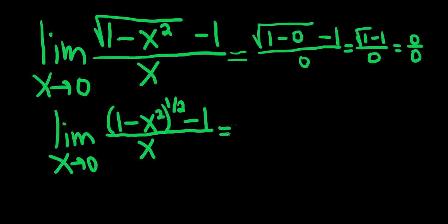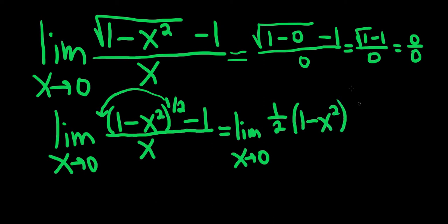Now let's apply L'Hopital's. This is the limit as x approaches 0. Taking the derivative in the numerator, we'll bring down the 1 half. We'll use the chain rule here, leave the inside untouched. Then 1 half minus 1 is negative 1 half times the derivative of the inside, which is negative 2x. The derivative of negative 1 is 0. On the bottom, we have the derivative of x, which is 1.